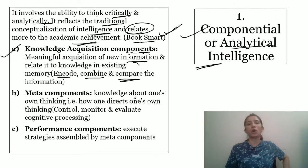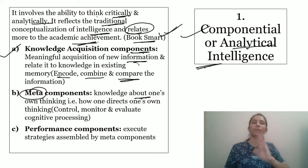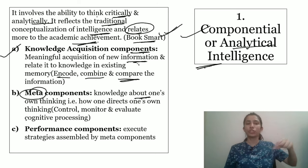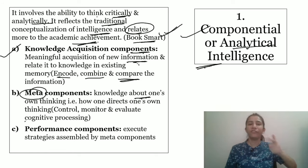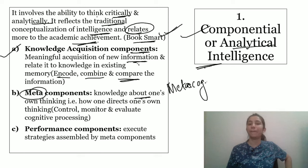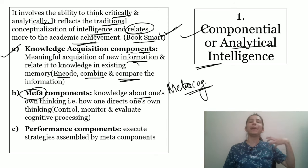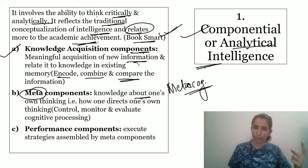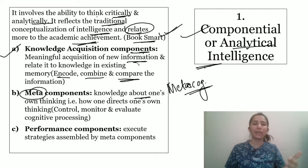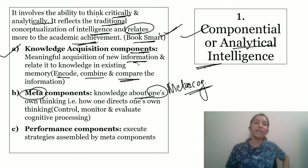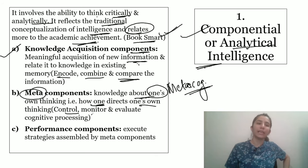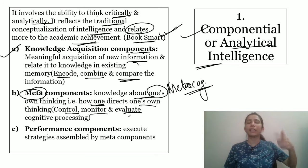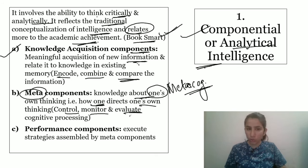Then there is the Meta-components — knowledge about one's own thinking. As we say meta-cognition, it's cognition about cognition. Meta-cognition means you think about your thinking, you reflect back. So knowledge about one's own thinking — that is how one directs one's own thinking. You control yourself, monitor information, and evaluate your cognitive processes.